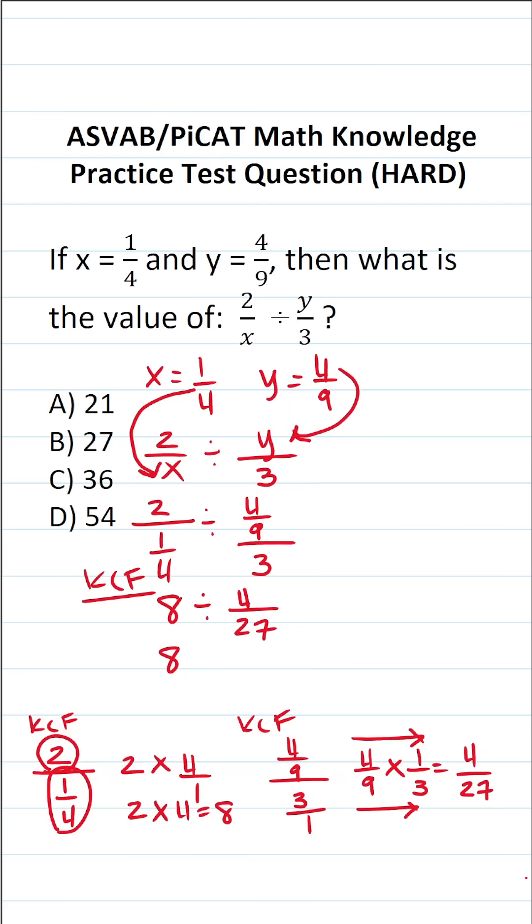We're going to keep 8 the same, change from division to multiplication, and flip this second fraction, so it's going to be 27/4. I can write 8 as a fraction by placing it over 1. This enables me to cross-reduce. I can say 4 goes into 4 one time, and 4 goes into 8 two times.